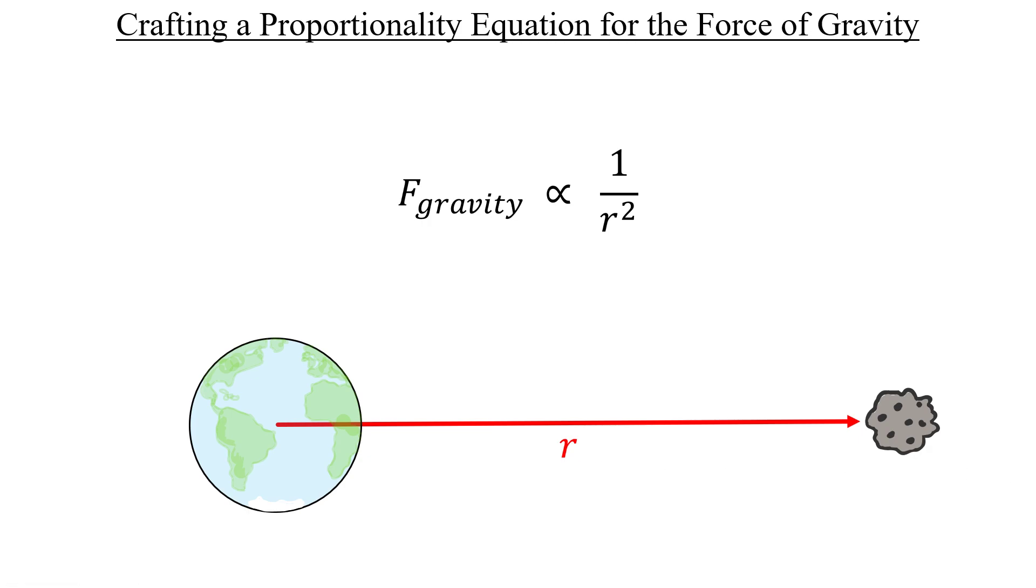that means that as the asteroid gets pulled in, it's actually moving along the opposite direction, towards negative r. To account for this attraction towards the Earth, we'll have to incorporate a negative sign in the proportionality, like this.